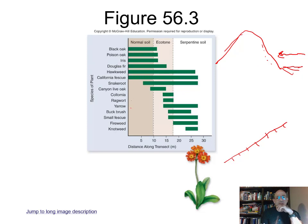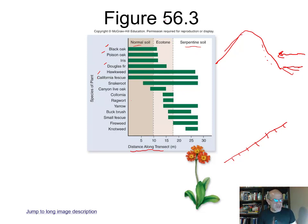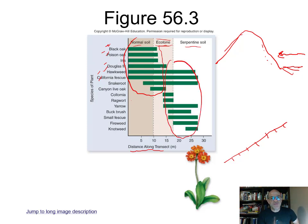Something similar is shown here, moving a distance along transects from normal soil to serpentine soil — which has certain metals and compounds — and then back. As you move along the transect, you also move from one soil type to another through a transition zone. You see an ecotone where one ecosystem characterized by certain species transitions to a different community with different species. This highlights the concept of the ecotone.